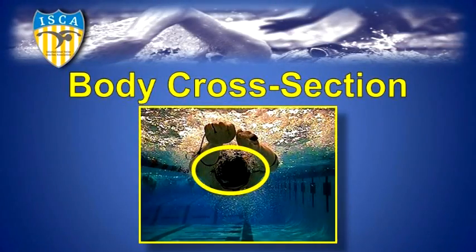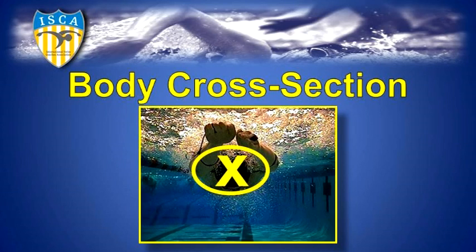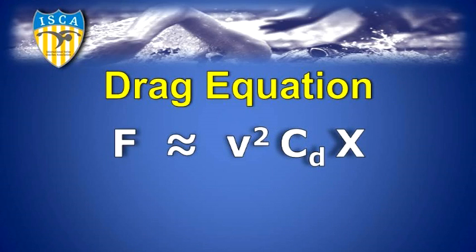To look at the streamline scientifically, let's look at the area that we're pushing through the water. If we draw an oval around the shoulders and see if all the body parts fit in that area, and think about how we can make that area as small as possible. We call that area x — the body cross section, typically symbolized as x. This is the drag equation.